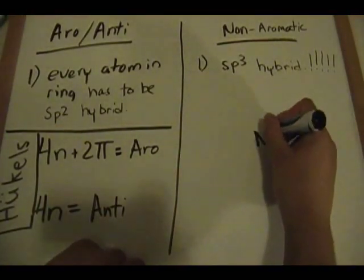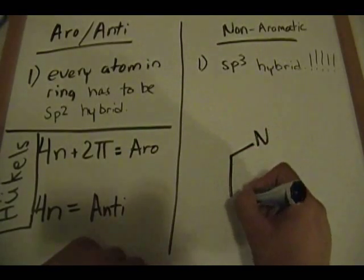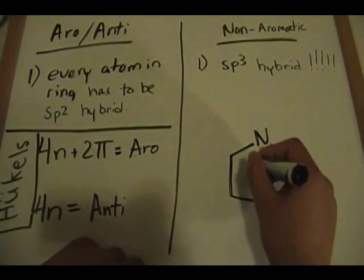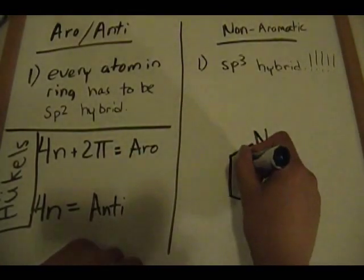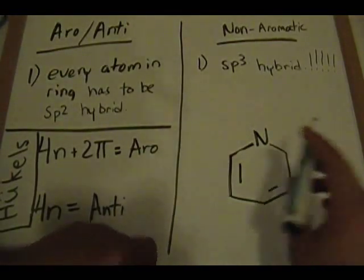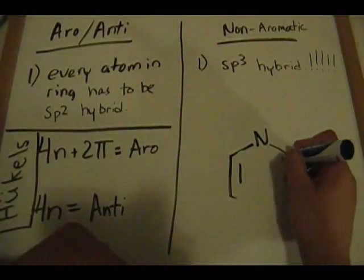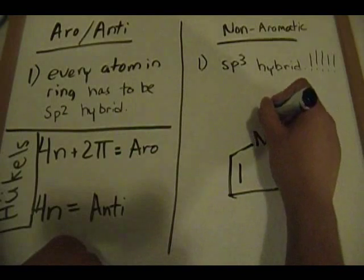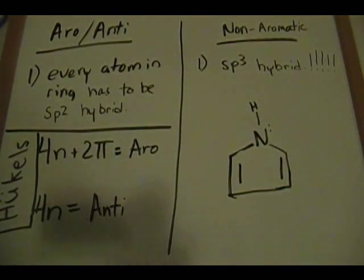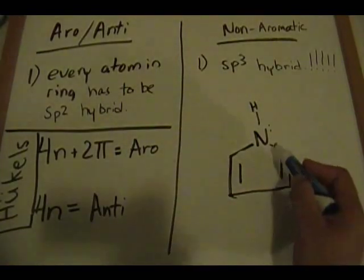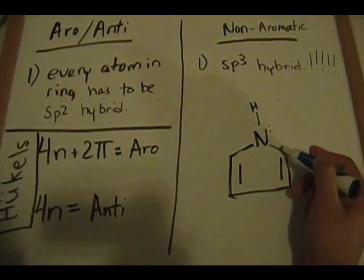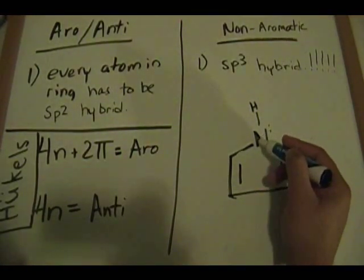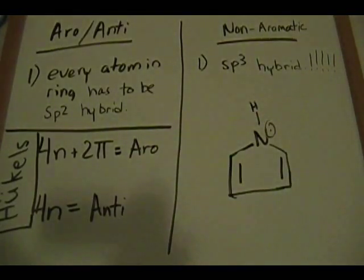What if you have something that looks like this — a nitrogen in the ring? Let's check if the atoms in the ring are sp2. See: sp2, sp2, sp2, sp2, sp2. For this nitrogen atom, we apply the same rule: this atom is sp2 hybridized and it's attached to an atom with lone pairs, so therefore it's also sp2 hybridized. That means we count the lone pair as pi electrons.